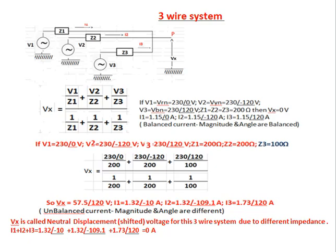Applying Millman's theorem with source voltages and impedances at various values: if V1 = Vrn = 230∠0°, V2 = Vyn = 230∠−120°, and Z1 = Z2 = Z3 = 200 ohms, then Vx = 0V. The phase currents are: I1 = 1.15∠0° A, I2 = 1.15∠−120° A — balanced current with equal magnitude and angle.